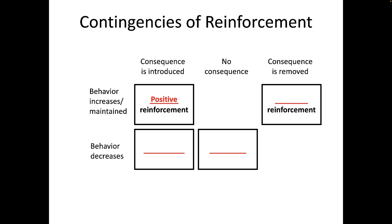First, positive reinforcement involves introducing a consequence that results in a certain behavior being increased or maintained. The consequence is usually a reward. So when we introduce a reward, we're increasing or at least maintaining desirable behavior. The classic example is giving a child a cookie for putting away their toys — that's technically positive reinforcement.